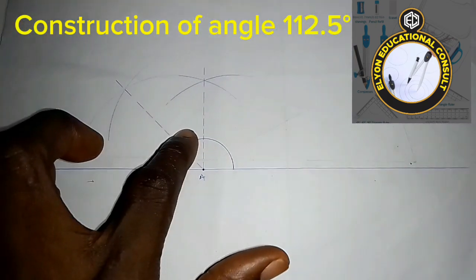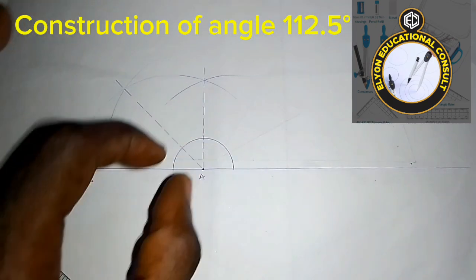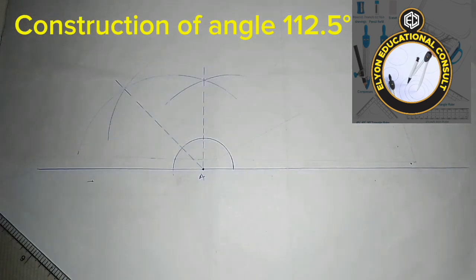This is 45 and 90. I will pick one of the 45 degrees which I'm going to bisect further to get angle 22.5 degrees.